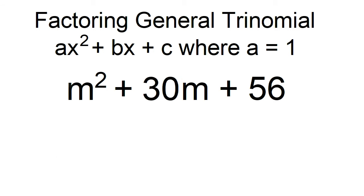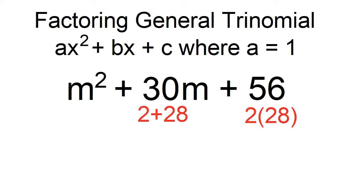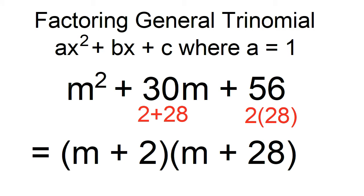Another example: m squared plus 30m plus 56. To factor, think of two numbers that will give you a product of 56 and a sum of 30. The numbers are 2 and 28 — 2 times 28 is 56, and 2 plus 28 is 30. The factors are m plus 2 and m plus 28.